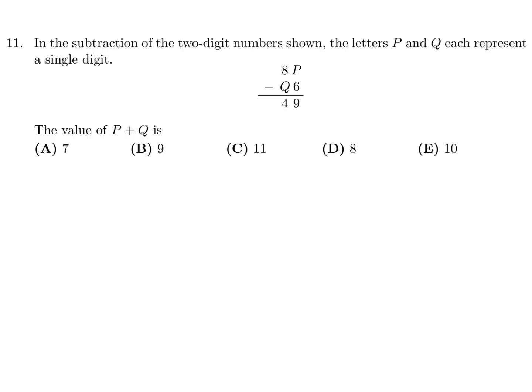In the subtraction of two-digit numbers shown, the letters P and Q each represent a single digit. The value of P plus Q is. So we have to fiddle around with this. Let's see what we can figure out.